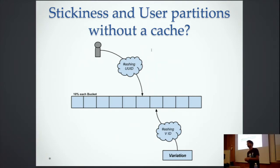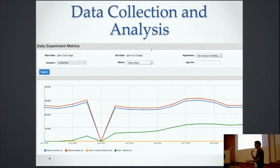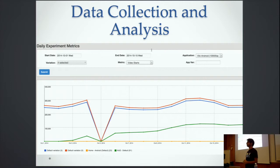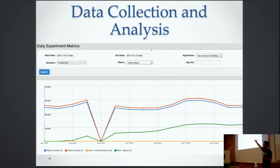We also try to minimize collisions. For data collection and analysis, the client sends us the data saying that under this particular session the user was under this experiment. We collect all that data and have automated daily jobs to figure out things like: these four experiments ran — how many video starts happened in the same session? This is difficult to get from tools like Optimizely because they don't have the data. Here's two weeks of data for Android, running four experiments to see which led to more video starts.